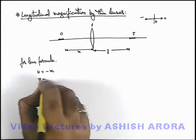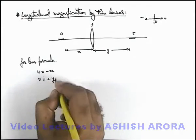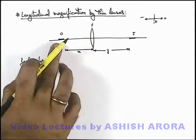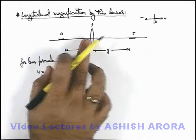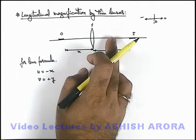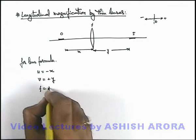Here the image distance we are getting is plus y, and for a convex lens, for the incident rays they are going to converge on the right side of the lens. We consider its focal length to be plus f.